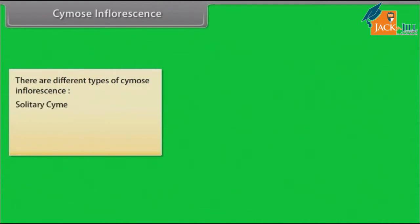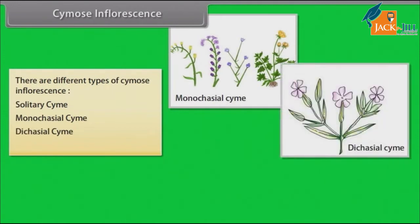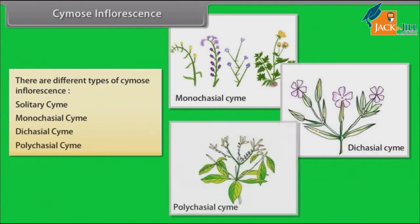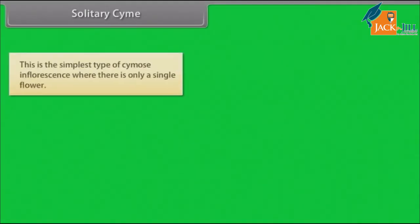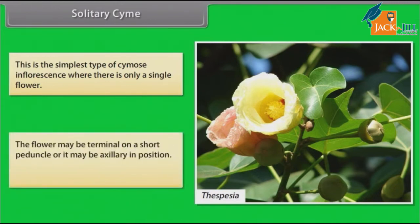The types are: solitary cyme, monochasial cyme, dichasial cyme, and polychasial cyme. Solitary cyme is the simplest type of cymose inflorescence, where there is only one single flower. The flower may be terminal on a short peduncle or it may be axillary in position. Example: Thespesia.